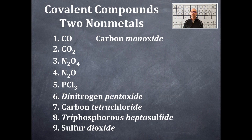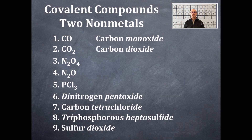Let's try number two. In number two, we have a carbon written first — the least electronegative element — and then an oxygen written second, the most electronegative. Again, we have only a single carbon, so we don't write a prefix for that. But there is more than one oxygen on the second element, so we've got to figure out the prefix for two of them. The prefix for two is di. So it's going to be carbon dioxide. Notice the -ide ending is there again as well.